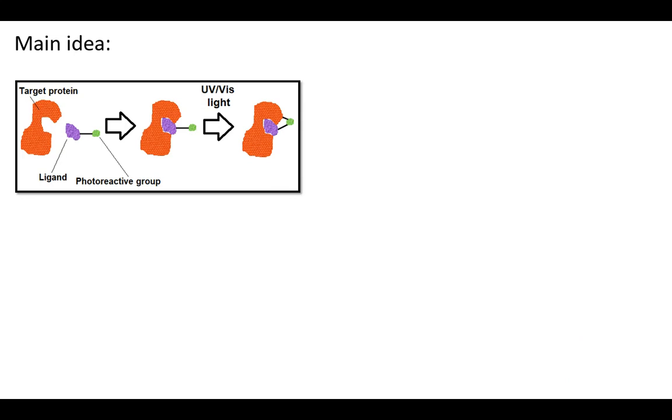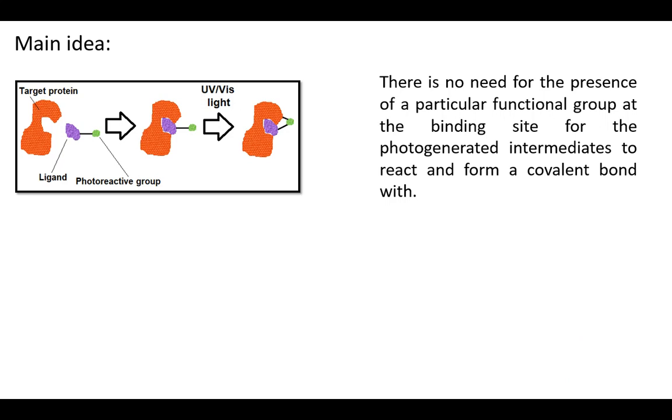The photogenerated species are usually so reactive that they can react with carbon-hydrogen bonds, so there is no need for the presence of a particular functional group at the binding site for the photogenerated intermediates to react and form a covalent bond with.